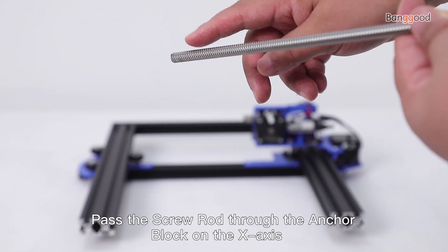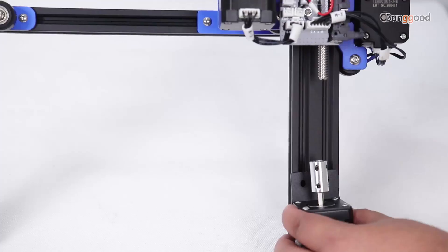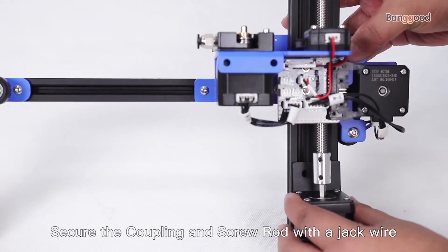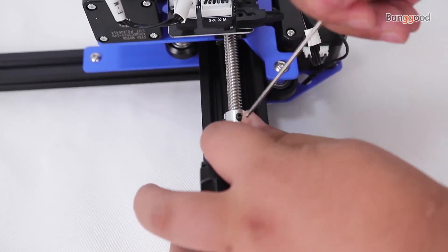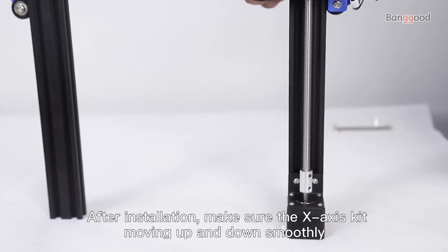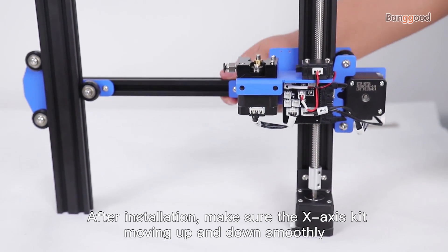Pass the screw rod through the anchor block on the X-axis. Secure the coupling and screw rod with a jack wire. After installation, make sure the X-axis kit moves up and down smoothly.